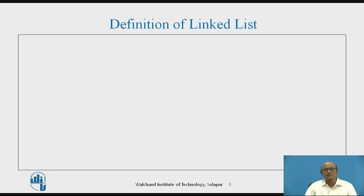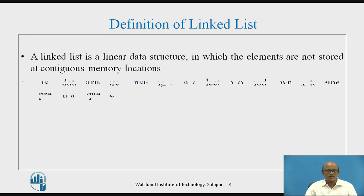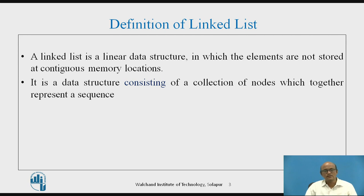Let us see the definition of a doubly linked list. A linked list is a linear data structure in which the elements are not stored at contiguous memory locations, whereas in an array the memory allocations are contiguous. It is a data structure consisting of a collection of nodes which together represent a sequence — that is called a linked list.